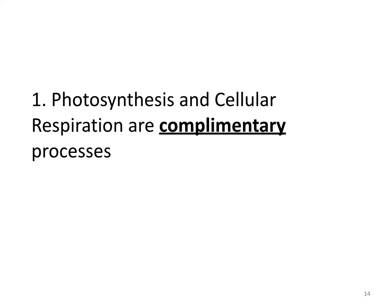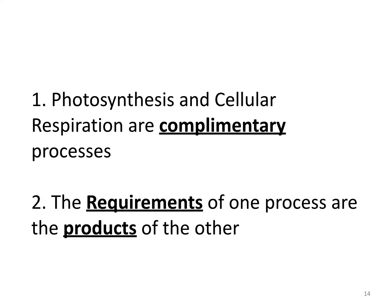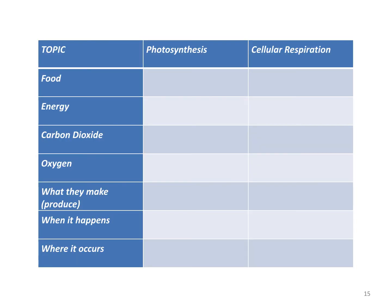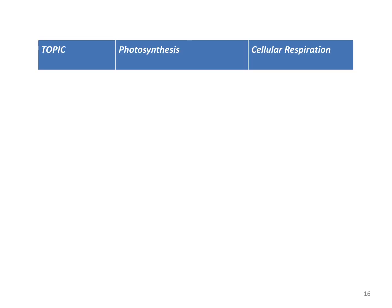Moving on, we have to look at these two processes together because they are known as complementary processes. Complementary means they need each other — they work well with each other. In science, complementary processes means the requirements of one process are the products of the other. The requirements mean what does one need, and the products are what the other one makes. Where photosynthesis starts is where cellular respiration ends, and where cellular respiration ends, the other one starts. There's a chart on your notes that shows you how they are complementary.